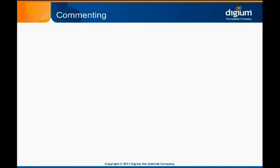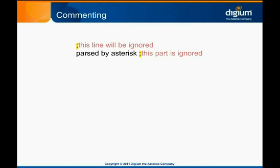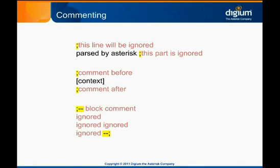In extensions.conf, comments work just like in other Asterisk configuration files. A semicolon indicates that the rest of the line should be ignored by Asterisk, so you can add a note on the same line as the context declaration, or have a line starting with the semicolon right before or right after the context declaration. Asterisk configuration files also support block commenting, where a comment begins after the semicolon-dash-dash token and continues until the dash-dash-semicolon token.